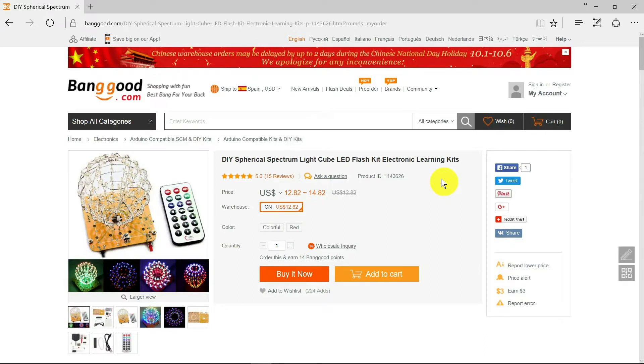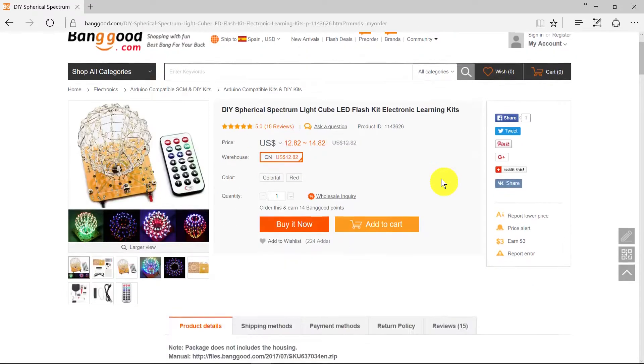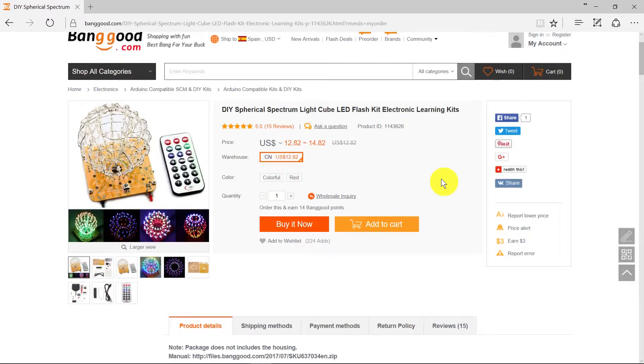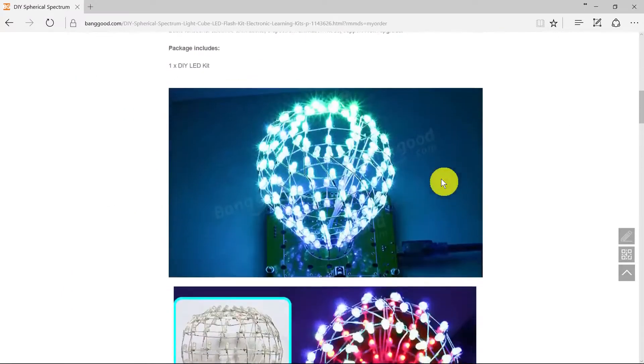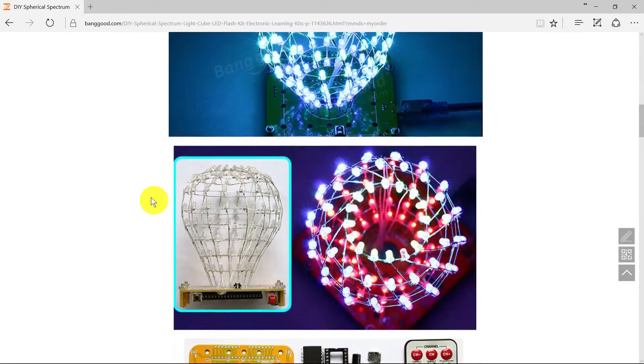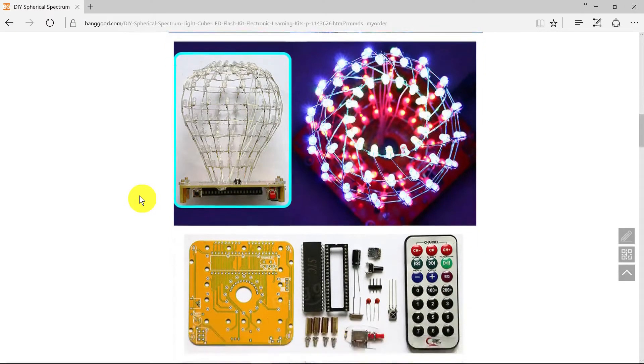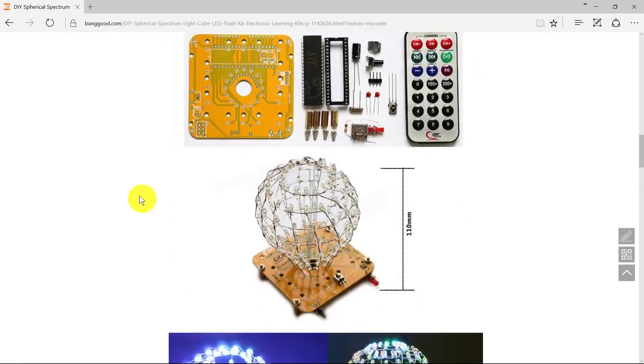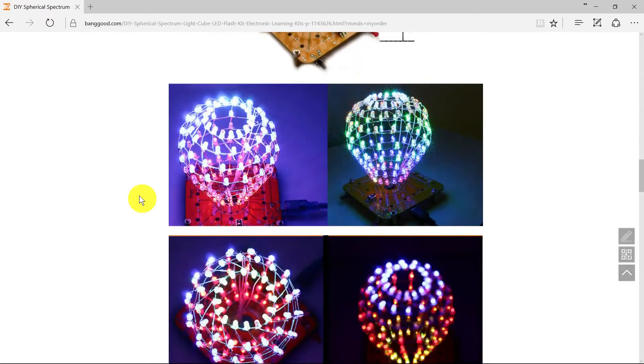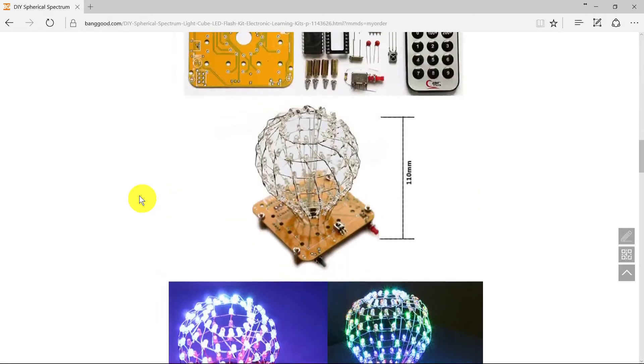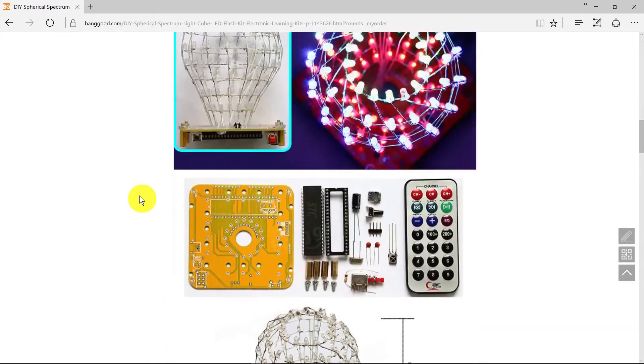What I really needed was a project to test the soldering iron and my own skills. I came across this project of building this LED cube. It's not actually a cube, it looks more like a sort of balloon shape, but you have to solder all of this together and it's going to be quite tricky. The effect ultimately is quite pleasing.